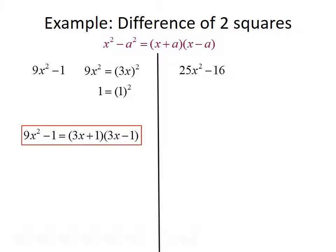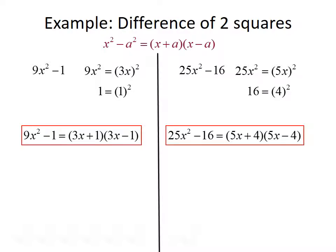Next we want to factor 25x squared minus 16. This again looks like the difference of two squares. The first term, 25x squared, can be rewritten as 5x quantity squared, and 16 can be written as 4 quantity squared. So we can use 5x and 4 in the formula, and 25x squared minus 16 can be factored to be 5x plus 4 times 5x minus 4.